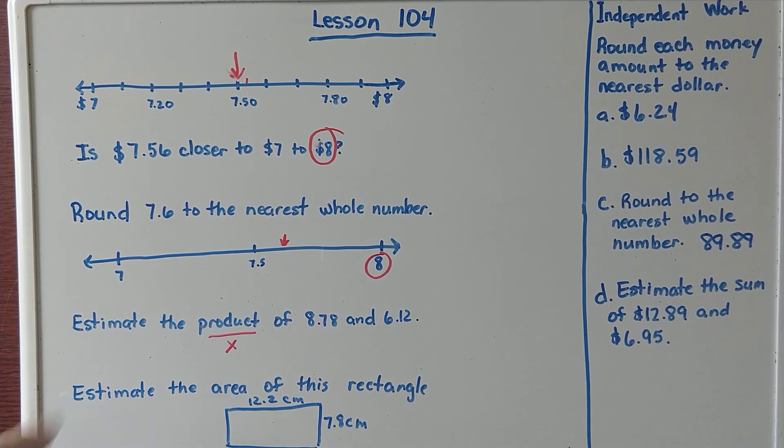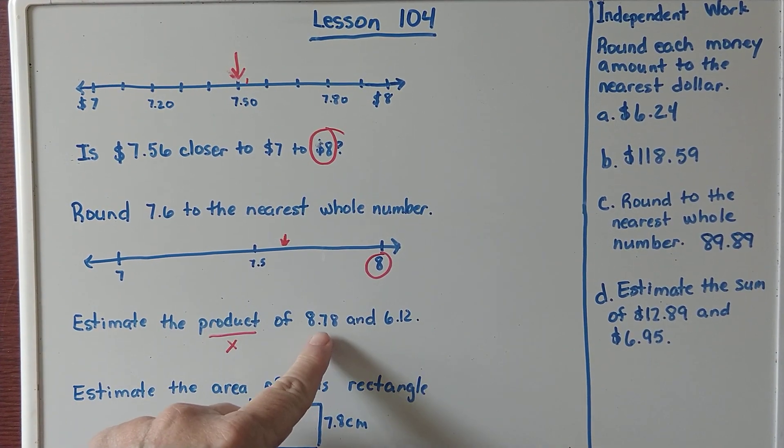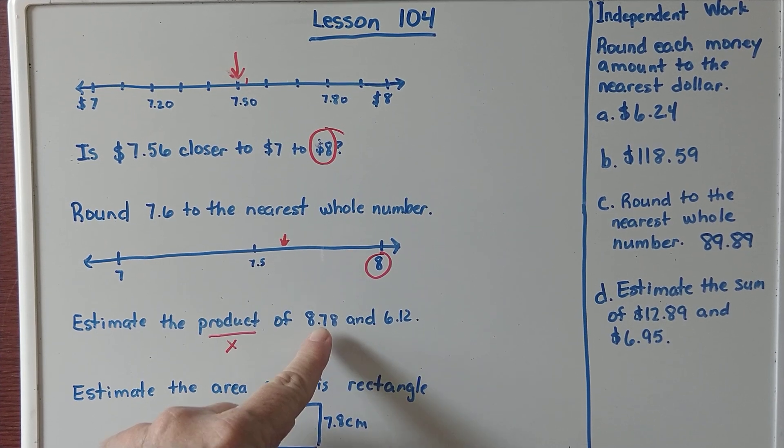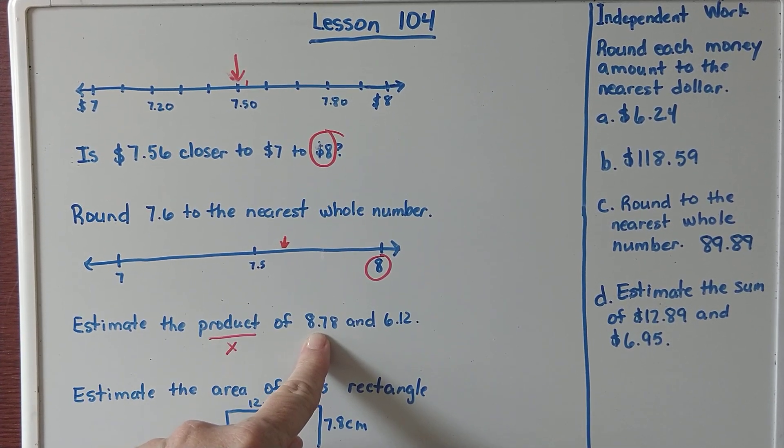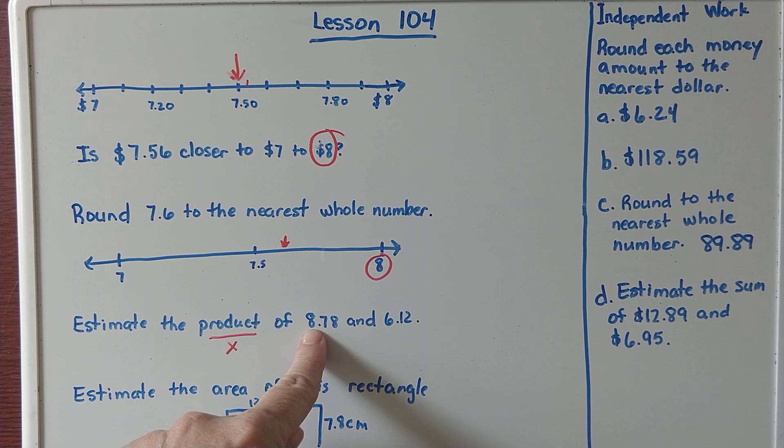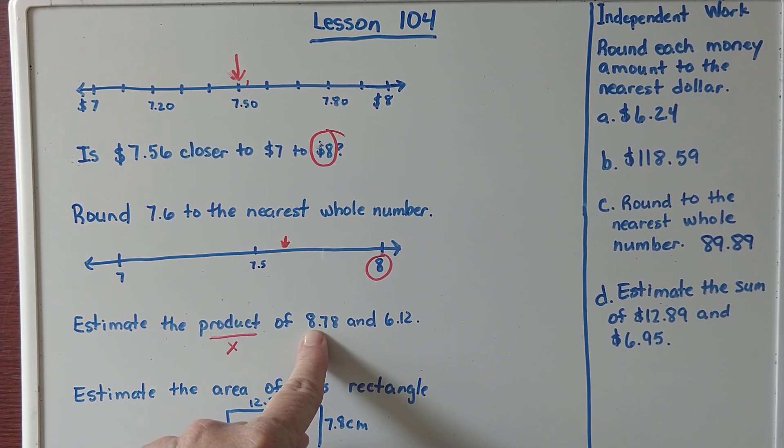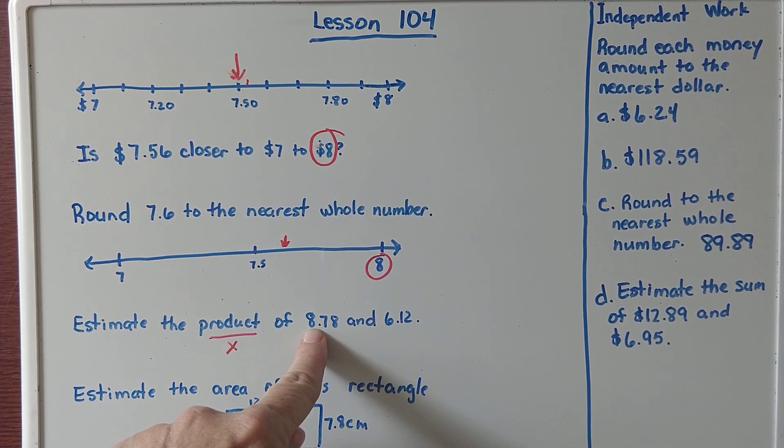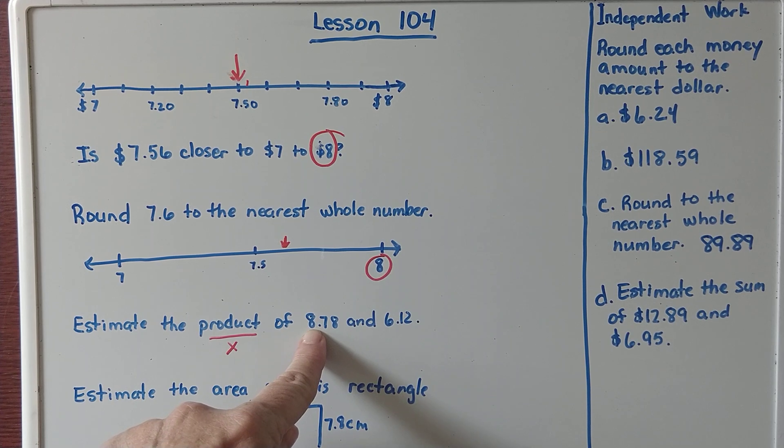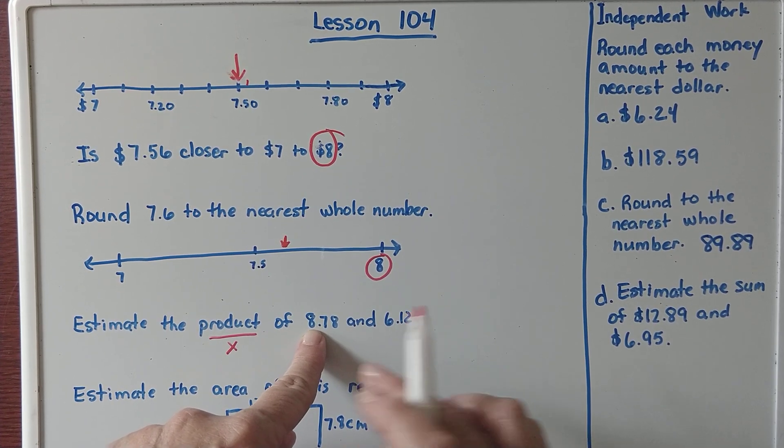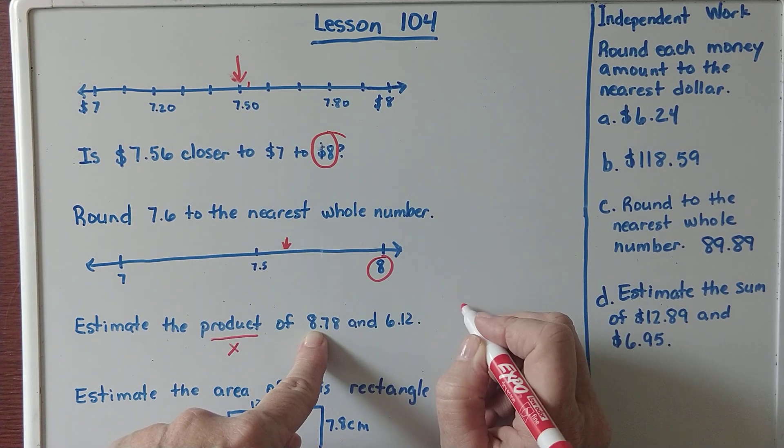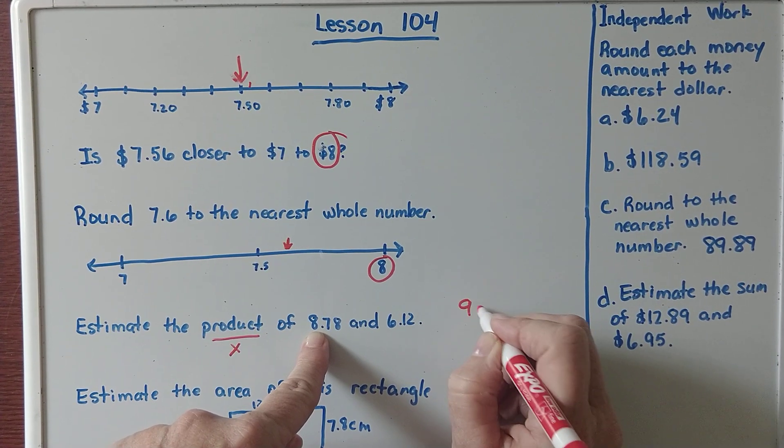When we estimate, we are going to round this to the nearest whole number. What would the nearest whole number be of 8 and 78 hundredths? Would it be closer to 8 or closer to 9? Well, it's past 8.5, so it would be closer to 9.